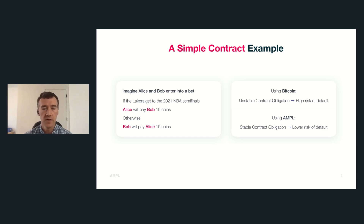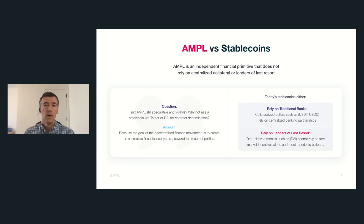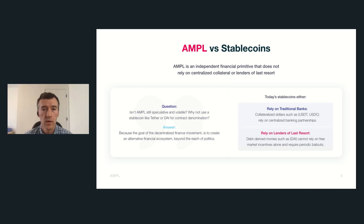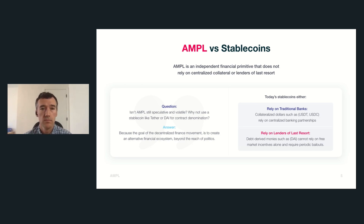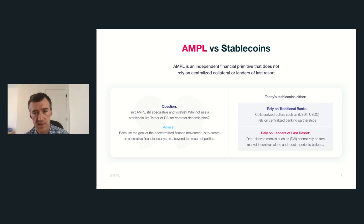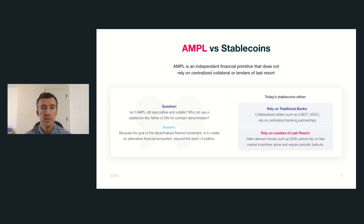You might be asking: this sounds a little like a stablecoin, but if Ample is still volatile in overall value the same way Bitcoin is, why not just use a stablecoin? You can still use a stablecoin — it just comes with different properties and trade-offs. There are really two main kinds of stablecoins on the market: dollar-collateralized stablecoins like Tether or USDC, which rely on relationships with centralized banks. As we build a decentralized financial ecosystem, we want to build an independent system not dependent on any individual actors.